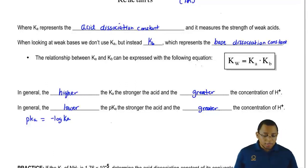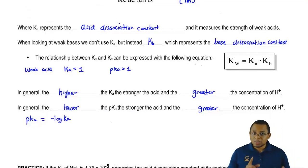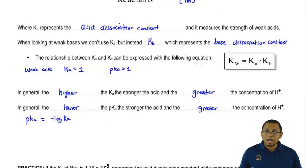Now when it comes to a weak acid, weak acid tends to have Ka value less than 1 and a pKa value greater than 1. Just realize we said inverse relationship. So Ka and pKa are opposites. If one is up, the other one is down.